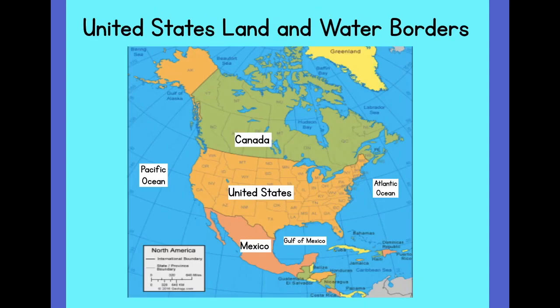Now back to some things we've learned. We are able to recognize that the United States is part of the North American continent and identify the United States land and water borders. The United States borders Canada, Mexico, the Atlantic Ocean, the Pacific Ocean, and the Gulf of Mexico.